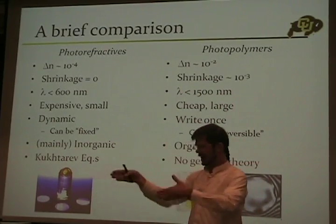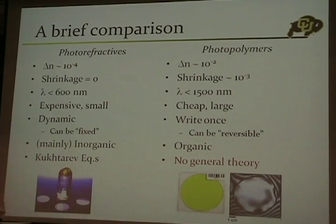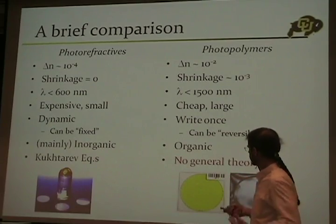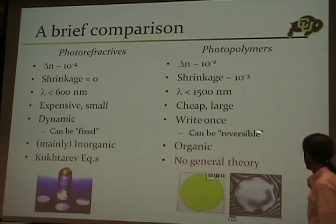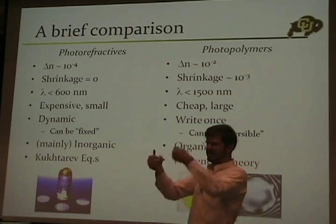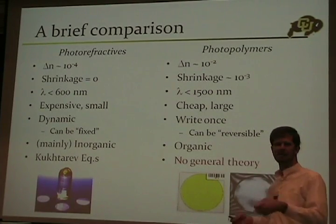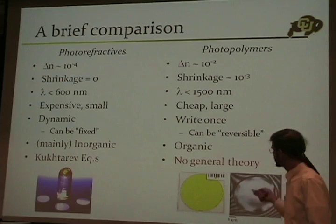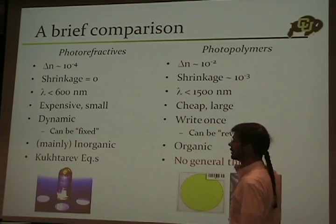Photopolymers tend to be materials you use once — they're not dynamic. However, it is possible to use a second color, excite things, break bonds and drive them back to their original state to get a sort of reversible process. That tends to work for 10 or 20 cycles and then various chain termination reactions happen and they can't keep going. It is conceivable — and no one has done this to my knowledge — to use these materials in dynamic optical processing environments similar to what photorefractives have been used in, with some interesting features.